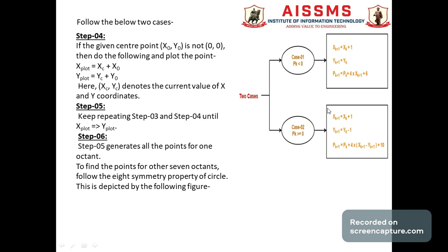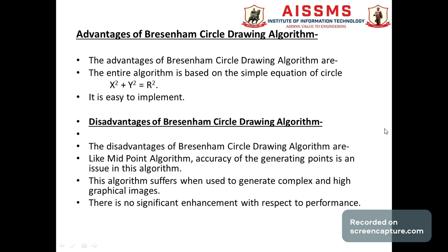Case 1: pk > 0; Case 2: pk ≤ 0. Step 4: check if center point (x0, y0) is not (0, 0), then plot x_plot = xc + x0 and y_plot = yc + y0. Step 5: repeat steps 3 and 4 until x_plot equals y_plot. To find the other seven octants, follow the eighth symmetry property of the circle as shown in the figure.